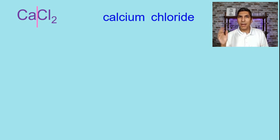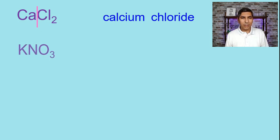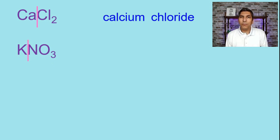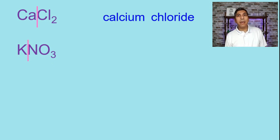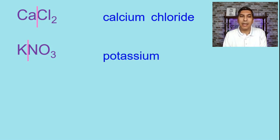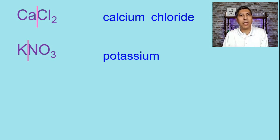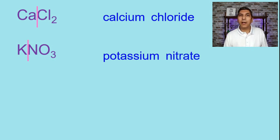Split it down the middle, name the cation, name the anion — that's it. Here's another one: KNO3. We're going to split it down the middle, right after the first metal. K has the name potassium. And then NO3 is a polyatomic ion from the ion chart — NO3 is called nitrate. So the name of this compound is potassium nitrate.